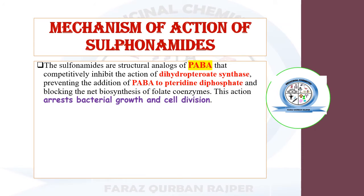Sulfonamides are basically a class of drug that acts as antibacterial. They are going to act as analogs of para-aminobenzoic acid because their structure is related to para-aminobenzoic acid. That's why they are known as structural analogs, and they are going to competitively inhibit the enzyme dihydropteroate synthetase, ultimately preventing the addition of PABA to pteridine diphosphate and blocking the biosynthesis of the folate coenzyme, which is required for essential growth and cell division of the bacterial cell.